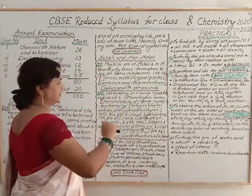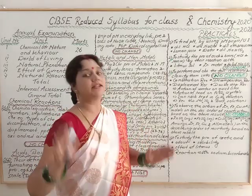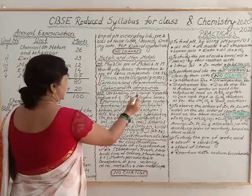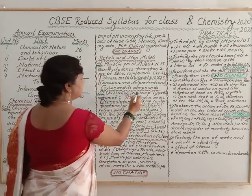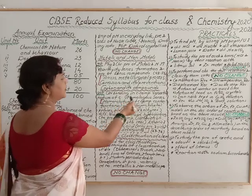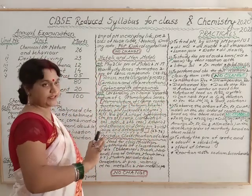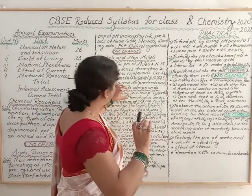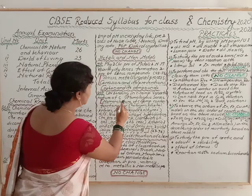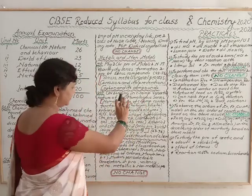For the year 2020-21, approximately 70% of this chapter has been deleted. Only these topics remain: covalent bonding in carbon compounds, versatile nature of carbon, and homologous series. That is all you need to study from this chapter this year.